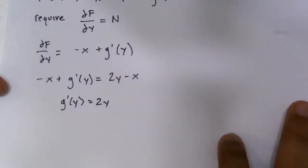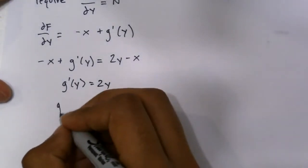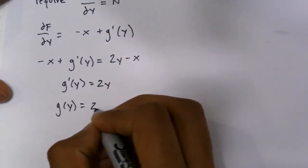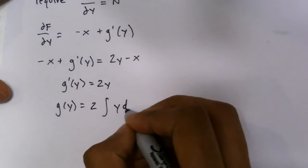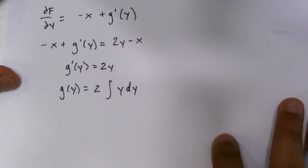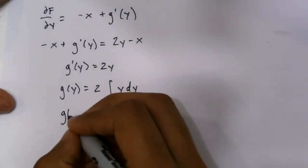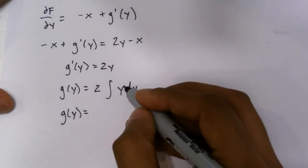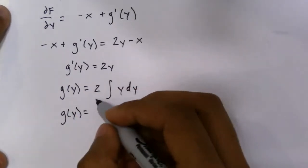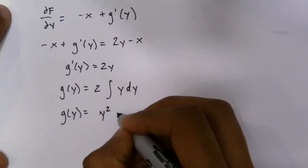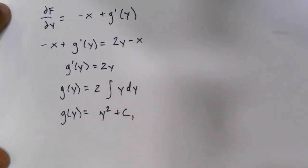Now it's very nice, because now we can take the integral, such that g of y simply equals 2 times the integral of y dy. So we do g of y, add 1 to the exponent, divide by the new exponent, you get y squared plus c1. I'm going to say c1 for now.